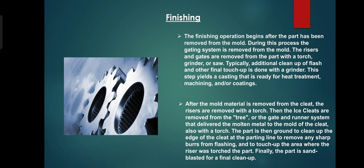Once profile reference and surface texture has been achieved, further post-treatment processes such as painting or electroplating may be necessary. The finishing operation begins after the part has been removed from the mold. During this process the gating system is removed from the mold, the risers are removed from the mold by torch, grinder or saw.